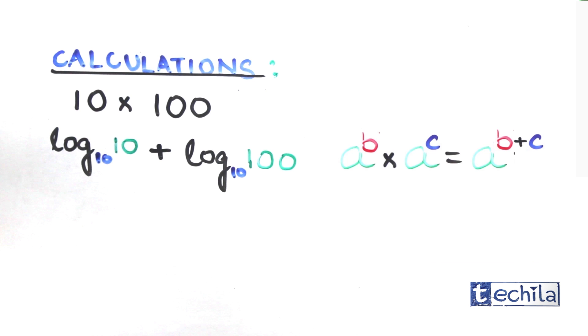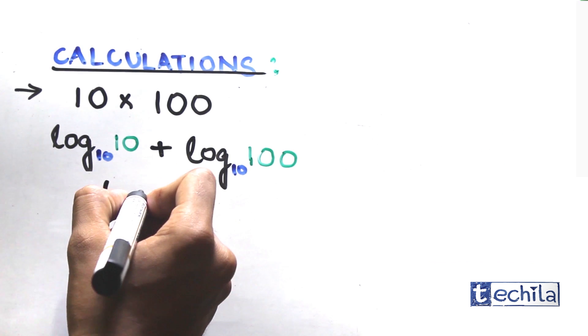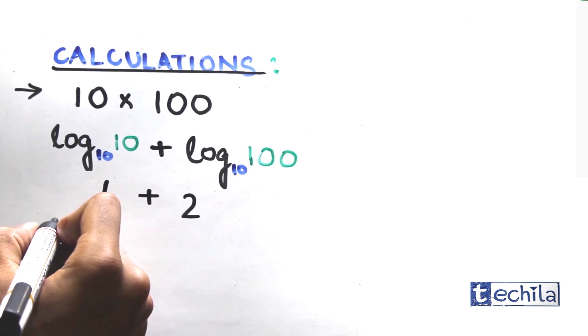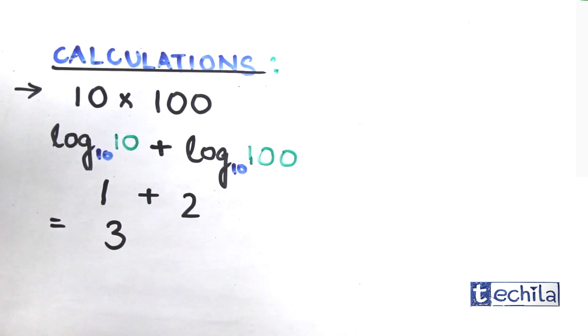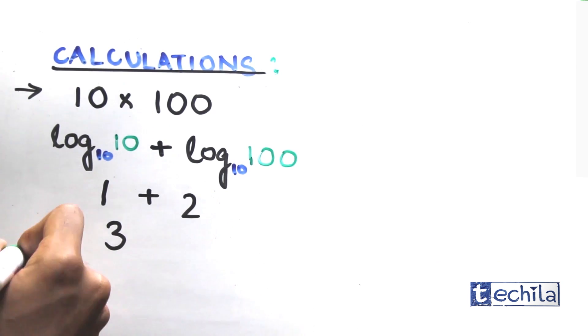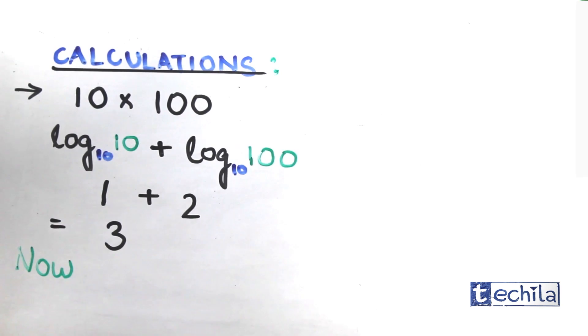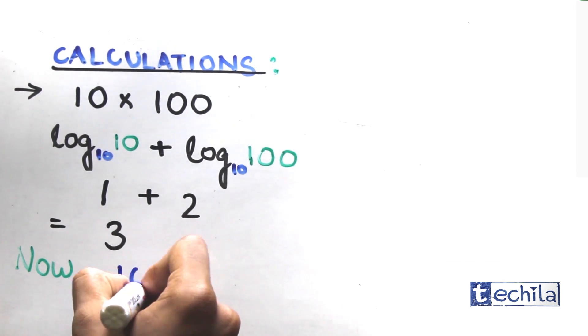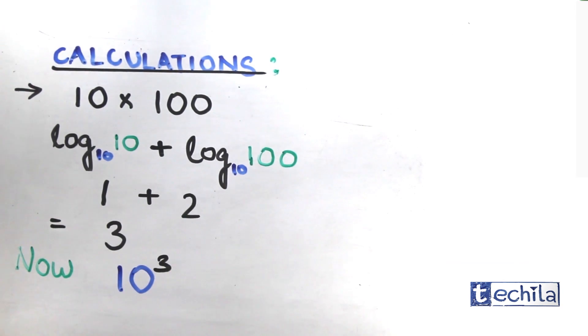Log with the base 10 of 10 is 1, and log with the base 10 of 100 is 2, so 1 plus 2 gives us 3. So for the final result, we need to raise the base 10 to the power 3, that is, 10 raised to 3 is 1000.